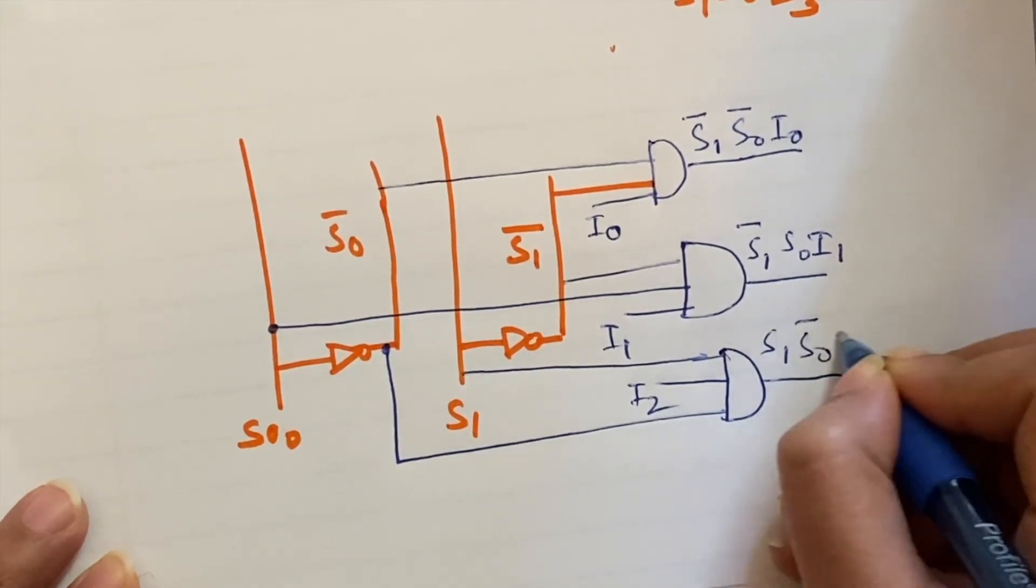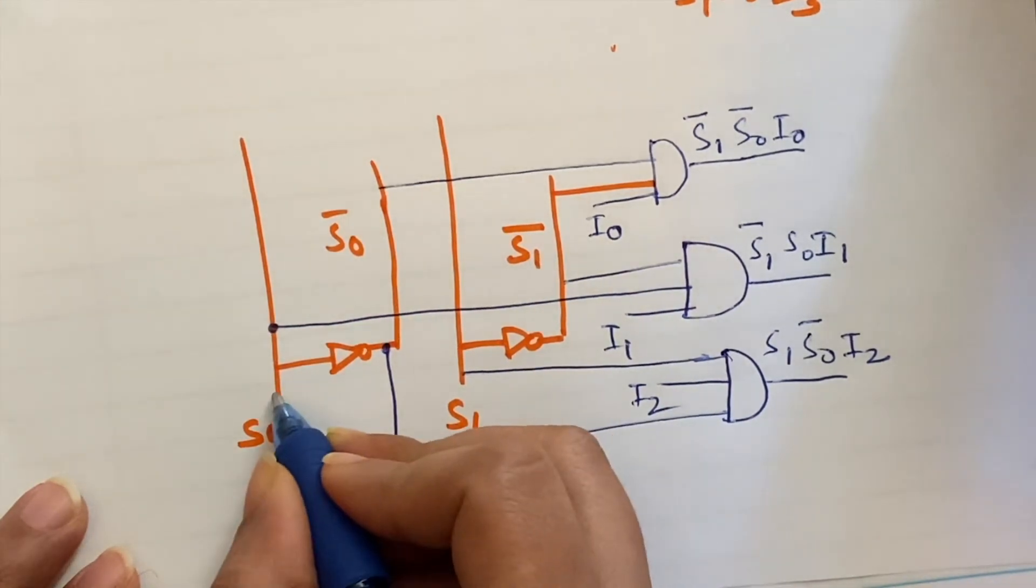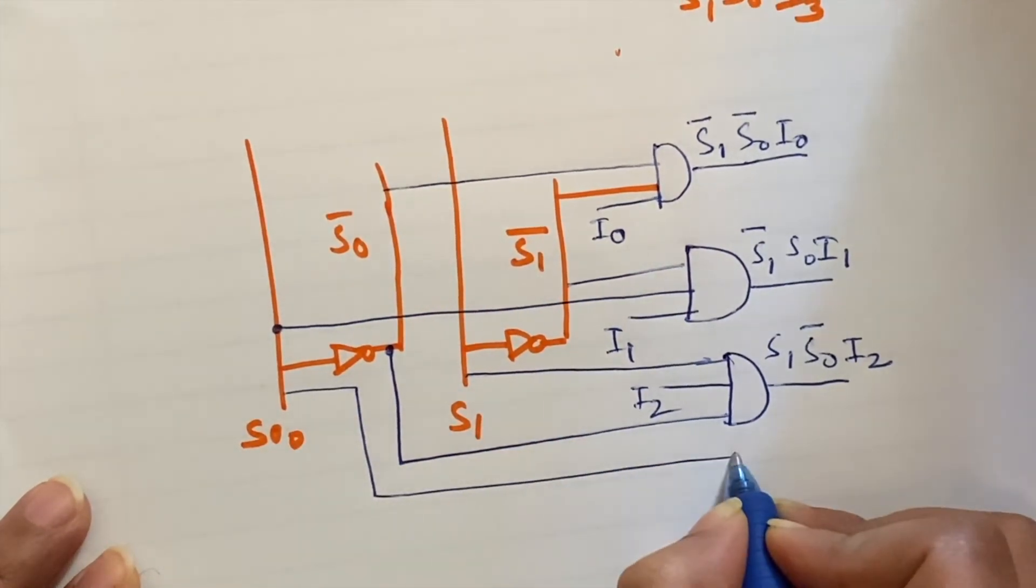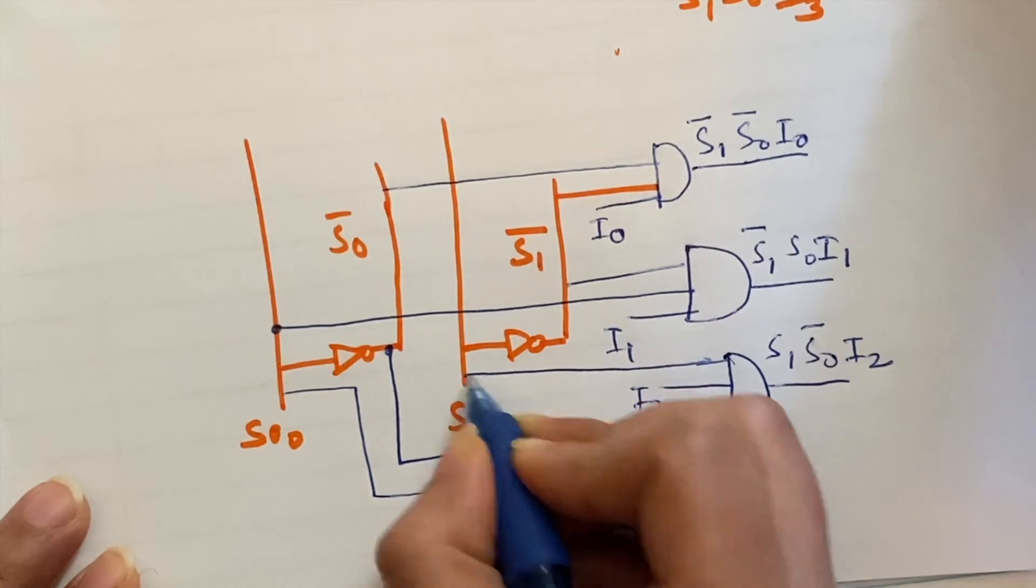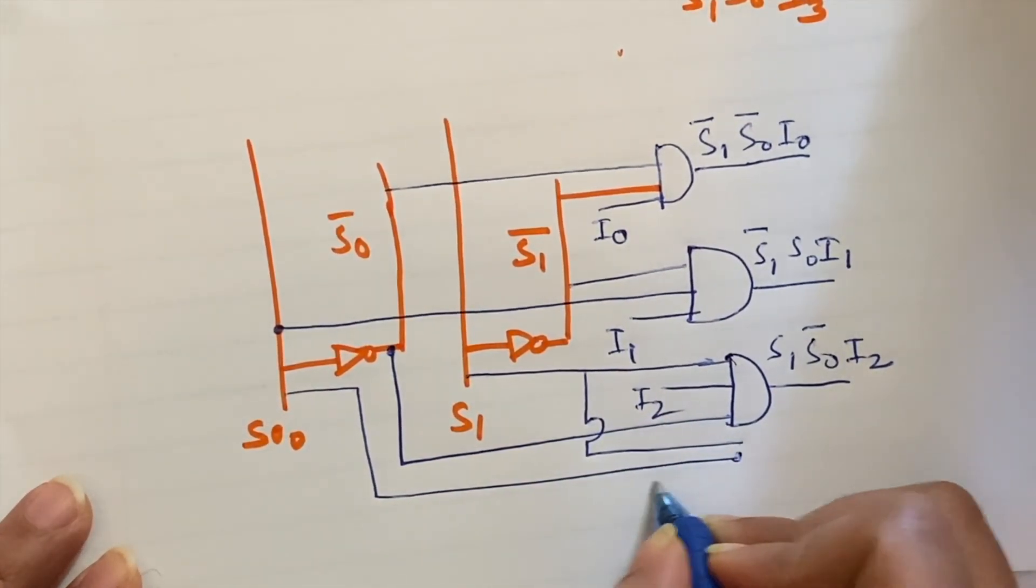s1, s0 bar and i2. Now the fourth term is s0, s1, we will take from here, s1 and i3.